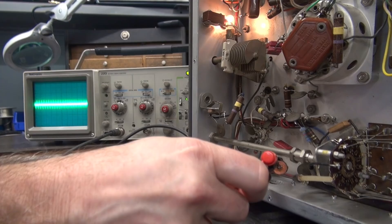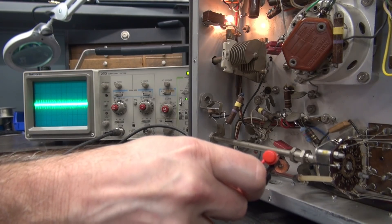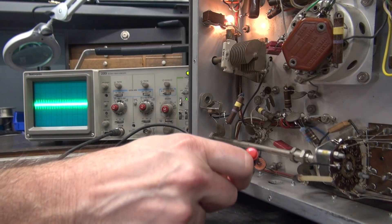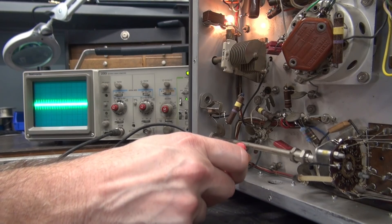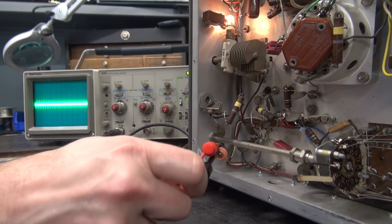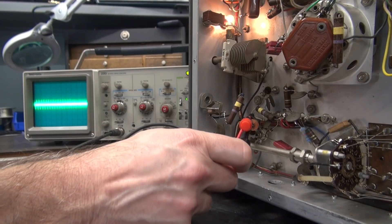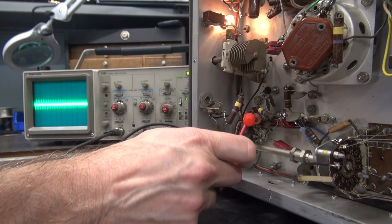If I work my way back to the 6AU6, it goes down. But as I go over here, there seems to be a little bit more of a noise signature. See there?